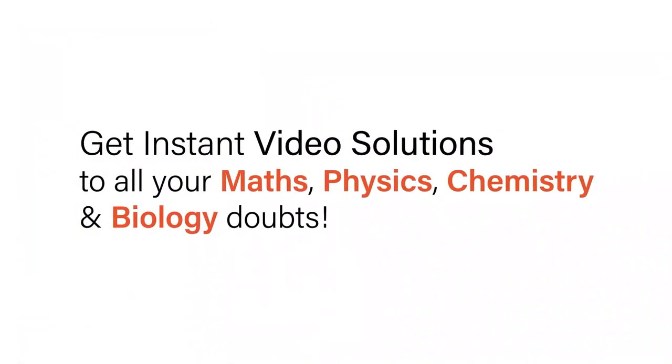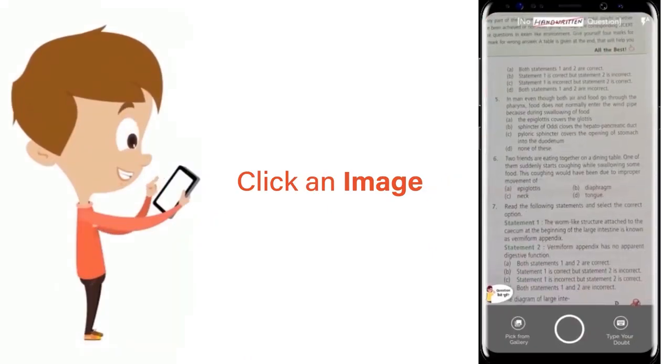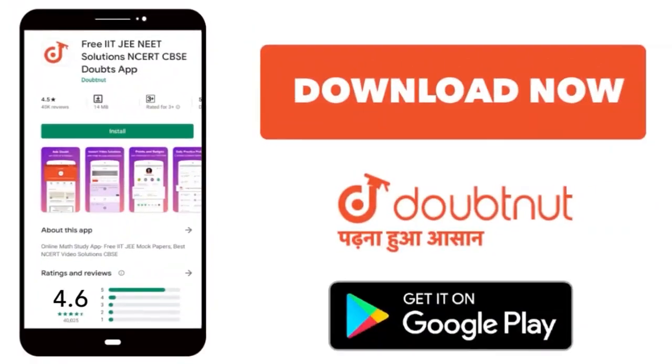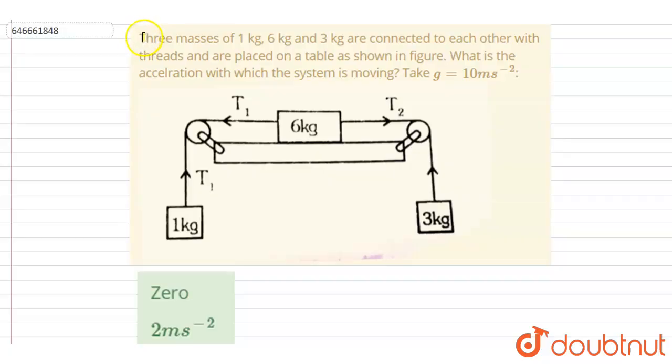With Doubtnet, get instant video solutions to all your maths, physics, chemistry and biology doubts. Just click the image of the question, crop the question and get instant video solution. Download Doubtnet app today. Hello everyone, three masses of 1 kg, 6 kg and 3 kg are connected to each other